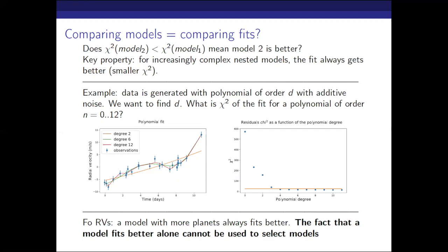The question is: if one model fits better — meaning chi-square is smaller — does it mean I can always favor the better-fitting model? The answer is no, because if your model is increasingly complex, it's going to fit better and better the data, but it doesn't mean it has to be favored. To illustrate this, I've generated an example where I fit a polynomial of degree 2, 6, and 12 to data generated from a polynomial plus noise. The higher the order, the better the fit. When you look at chi-square for order zero through higher orders, you see it's always decreasing — so the chi-square alone cannot be used to select models.